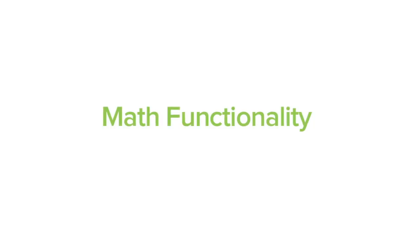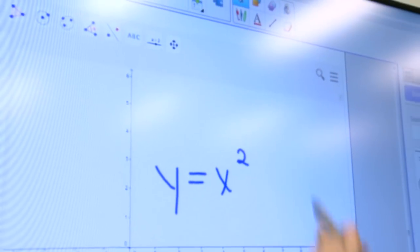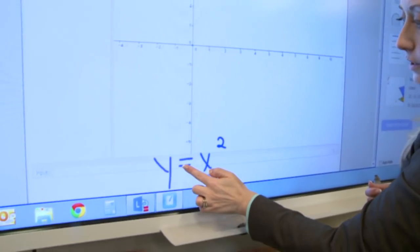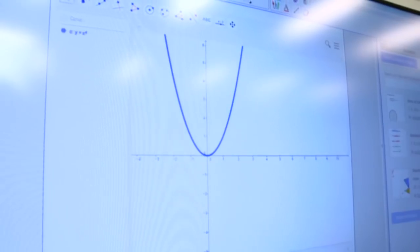I've inserted a GeoGebra widget right onto the Notebook page, and now I'm going to use my pen to write an equation, and now I'm going to drag the equation down into the input box down here at the bottom, and when I let go, you can see it automatically graphs that equation for me.